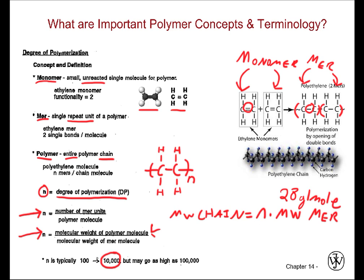Now we know, given that our n is 10,000, we can find the molecular weight of the chain by multiplying the two together. That's 10,000 times 28 grams per mole. The molecular weight of the chain is going to be equal to 280,000 grams per mole.